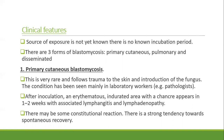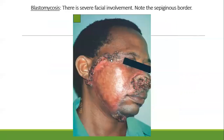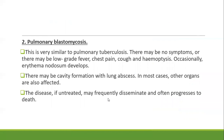There may be some constitutional reaction, and there is a strong tendency toward spontaneous recovery. One can note numerous ulcerated and crusted nodules on the chest with systemic involvement, and severe facial involvement with scarring and elevated border. Pulmonary blastomycosis is very similar to pulmonary tuberculosis or histoplasmosis. There may be no symptoms, or there may be low-grade fever, chest pain, cough, and hemoptysis; occasionally erythema nodosum develops, with cavity formation and lung abscesses. If untreated, the disease may frequently disseminate and often progress to death.